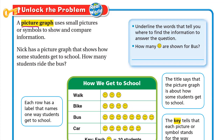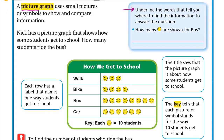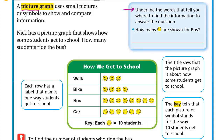Nick has a picture graph that shows how some students get to school. How many students ride the bus? Underline the words that tell you where to find the information to answer the question. Nick has a picture graph, so we will use this picture graph to solve our question. We need to underline the picture graph. For bus, we have one, two, three, four, five, six, seven, eight symbols.